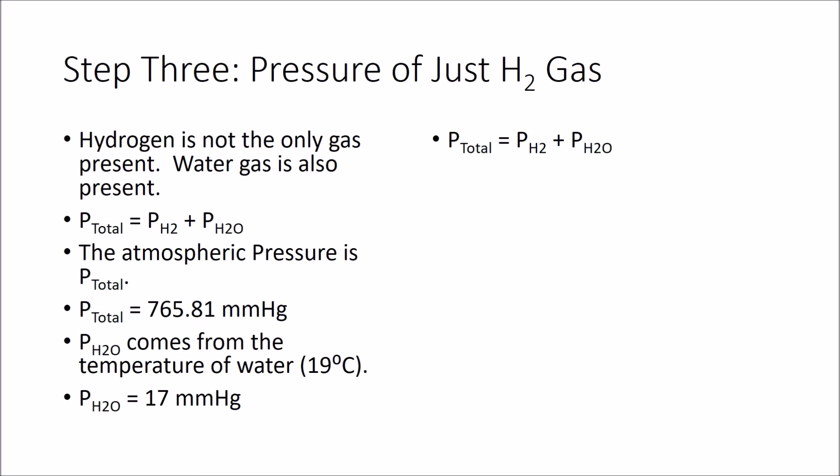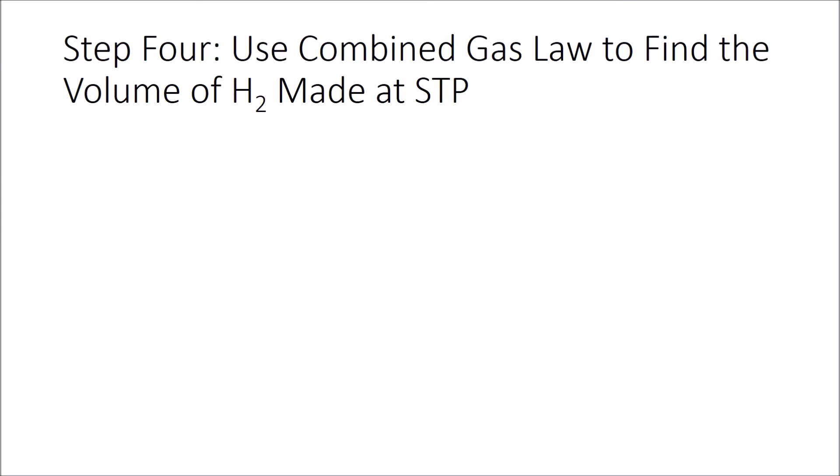So our total pressure is the sum of those two things. If I subtract the pressure of water from our total, I can get the pressure of just hydrogen. That's what the subtraction looks like. And it comes out to 748.81 millimeters mercury, which, when I round to the right number of significant figures, is 749 millimeters mercury.